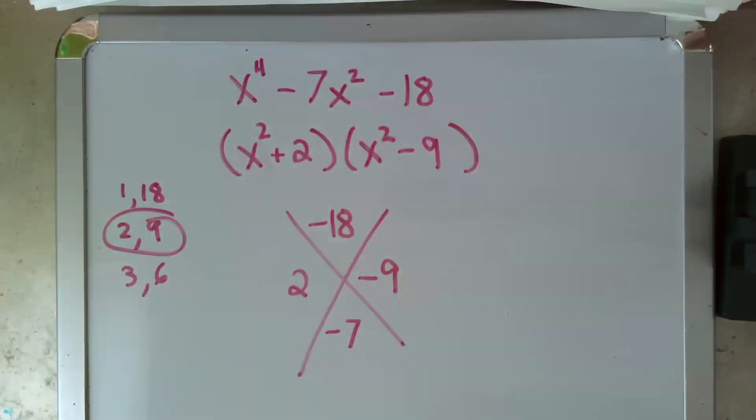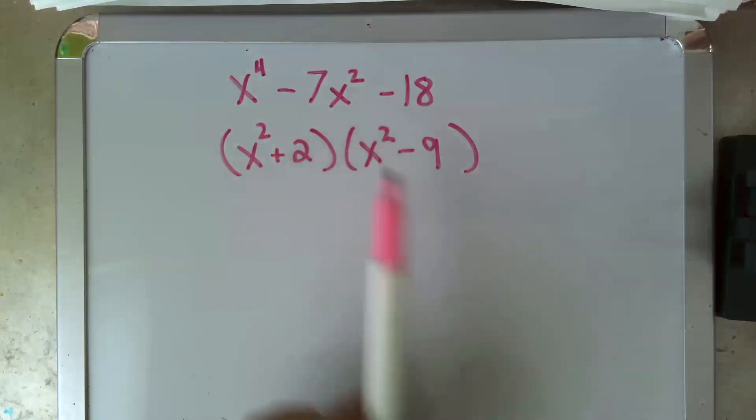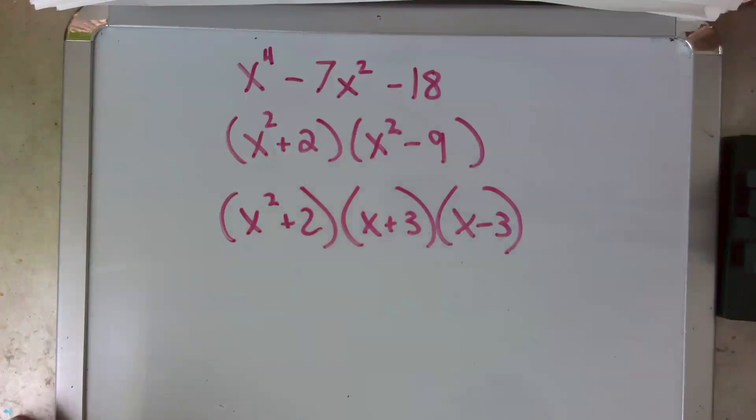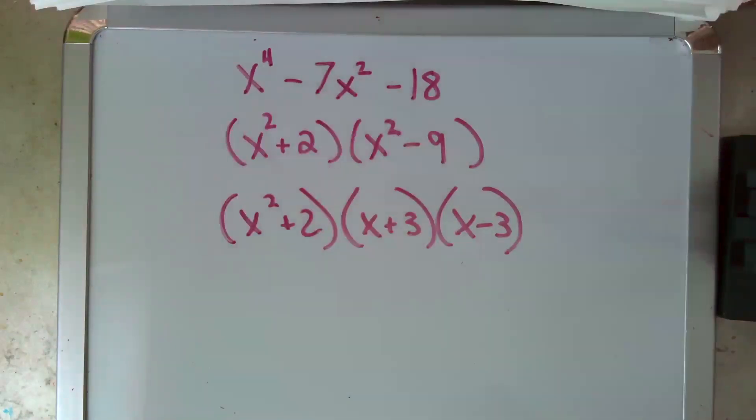And now here's the thing to remember. If these just said x, we would be fully factored. But because these say x squared, we want to take a look at the one that contains the minus, the difference. We want to check for a difference of squares. And lo and behold, there it is. If this doesn't mean anything to you, go check out my video on difference of squares. Otherwise, we continue to factor. And that is our fully factored trinomial here.